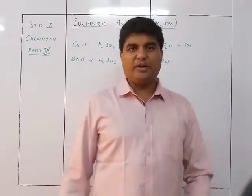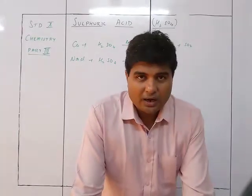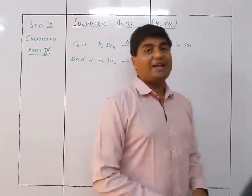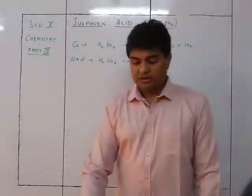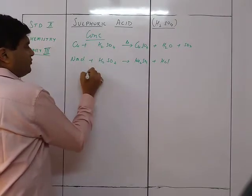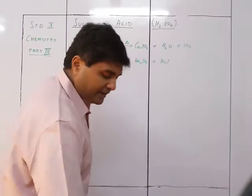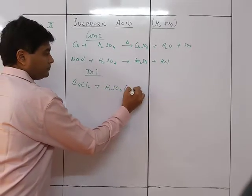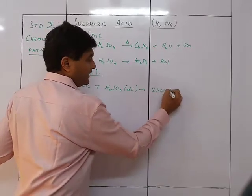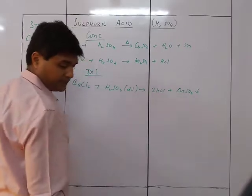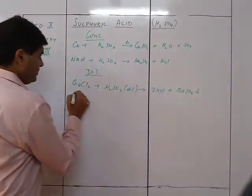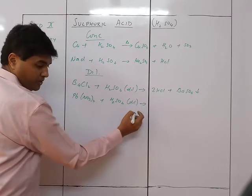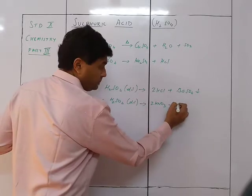For dilute H₂SO₄: BaCl₂ + H₂SO₄ (dilute) → 2HCl + BaSO₄ (white precipitate). Also: Pb(NO₃)₂ + H₂SO₄ (dilute) → 2HNO₃ + PbSO₄ (precipitate). While all sulfates are generally soluble, barium sulfate and lead sulfate are the exceptions — they are insoluble, forming a white precipitate.